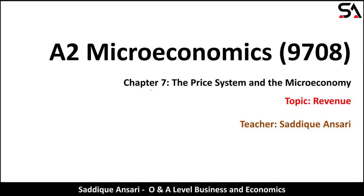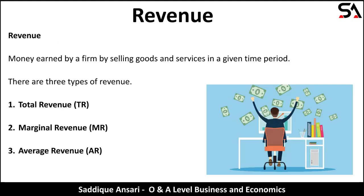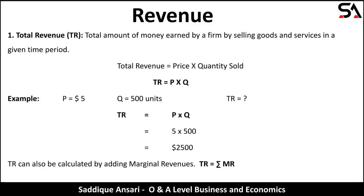In chapter seven we are discussing the topic of revenue. In our last session we discussed that revenue means money earned by a firm by selling goods and services in a given time period. There are three types of revenue: total revenue, marginal revenue, and average revenue.